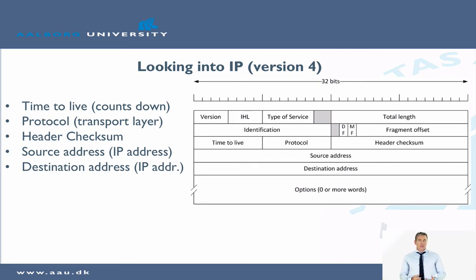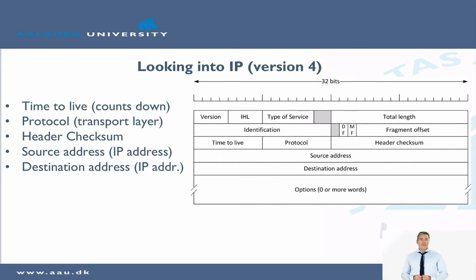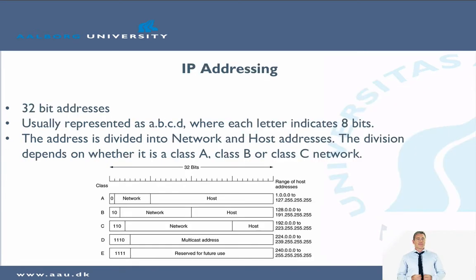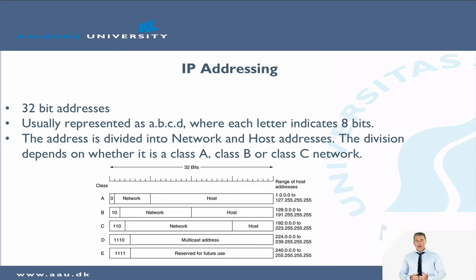Then of course you have the source address, which is an IP address, and the destination address, which is also an IP address — both of these are 32-bit addresses. IP addressing uses 32-bit addresses, usually represented as A.B.C.D where each letter indicates 8 bits. The address is divided into a network part and a host part, and this division depends on whether it is a class A, class B, or class C network.